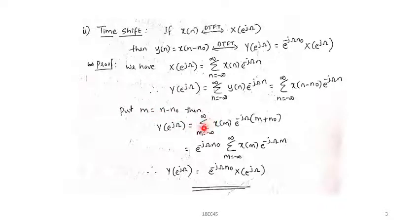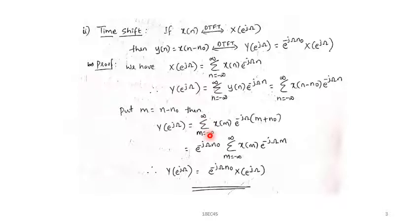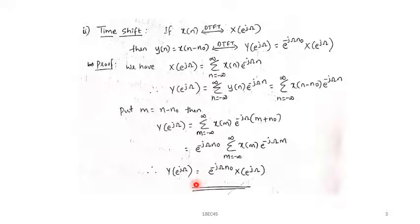I write the summation over m from minus infinity to plus infinity of x(m)·e^{-j\omega(m+n₀)}, expanding to e^{-j\omega m}·e^{-j\omega n₀}. Taking the constant e^{-j\omega n₀} outside: e^{-j\omega n₀}·summation over m of x(m)·e^{-j\omega m} = e^{-j\omega n₀}·X(e^{j\omega}). Therefore, the DTFT of y(n) = x(n − n₀) is Y(e^{j\omega}) = e^{-j\omega n₀}·X(e^{j\omega}).